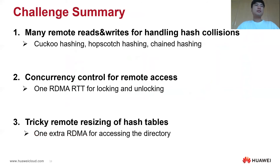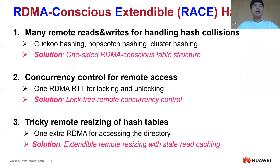In summary, there are three challenges for designing a hash index in disaggregated memory. To address those challenges, we propose RACE hashing: an RDMA-conscious extendable hashing scheme. First, RACE hashing leverages a one-sided RDMA-conscious table structure that needs only two or three RDMA RTTs to execute all kinds of index requests and effectively deals with hash collisions. Second, RACE hashing leverages a lock-free scheme to deal with remote concurrency control. Third, RACE hashing leverages extendable resizing with stale-read client cache to reduce the one extra RDMA RTT for accessing the directory.